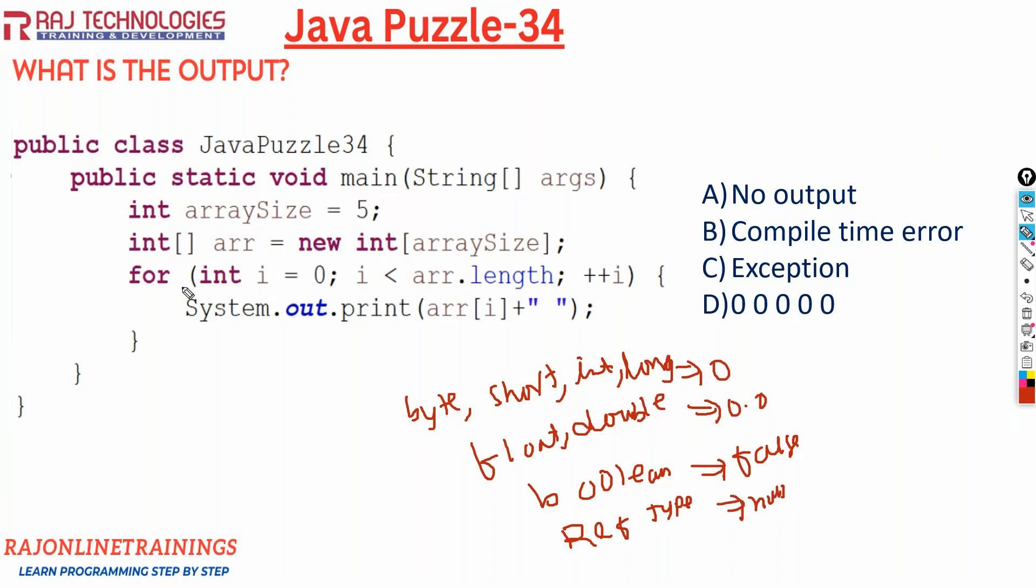But here we are going with integer array. And every index element is what type here? Integer. So the array value what it holds is of type integer. So the default value for integer, what is it going to take here? Zeros. So that's the reason the correct output of this program is D option: five zeros.